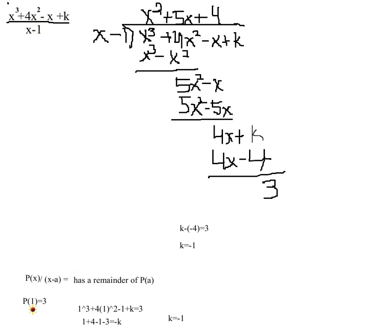So when p is evaluated at 1, we should get 3. So what does it mean when we evaluate p at 1? The polynomial gets 1 into all those x spots. So we have 1 cubed, 4 times 1 squared, minus 1, and plus k is equal to 3. A little bit of algebra later, we have k is equal to negative 1.